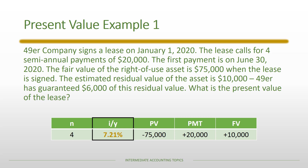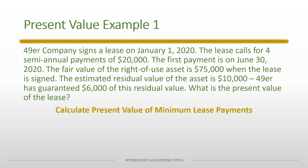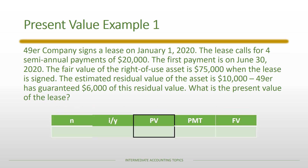Now we have all the information needed to solve for the discount rate — the implicit rate in the lease — which is 7.21%. The second step is to take that information and calculate the present value of the minimum lease payments. In the TVM framework, PV is highlighted because that is what we'll be solving for.